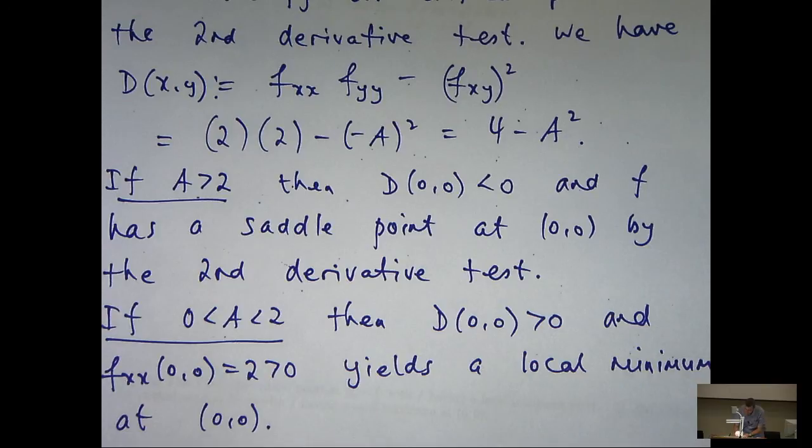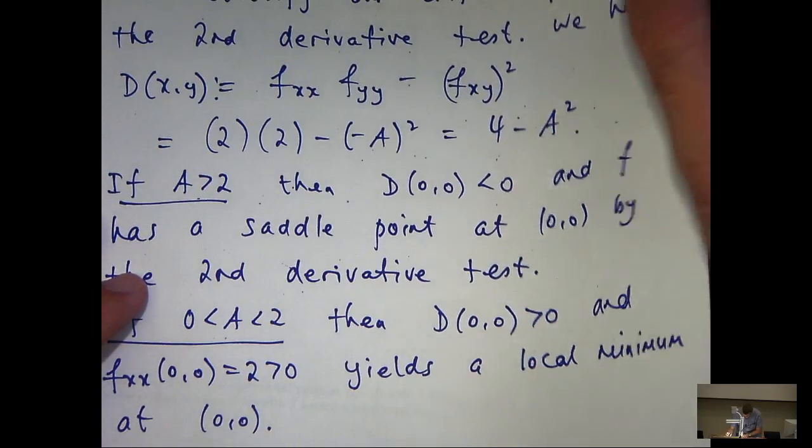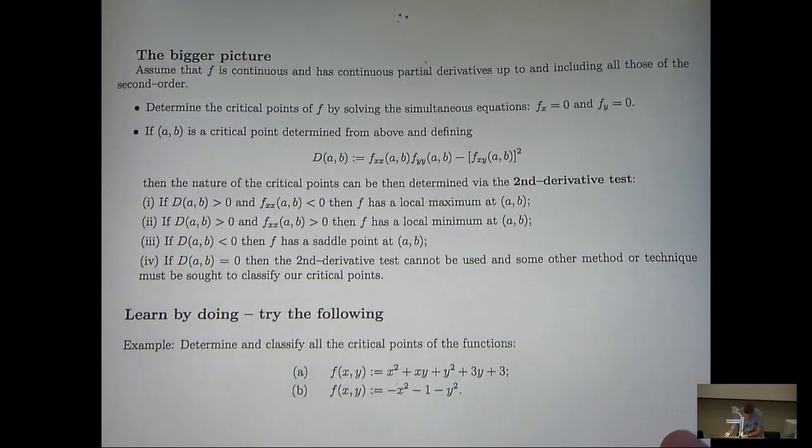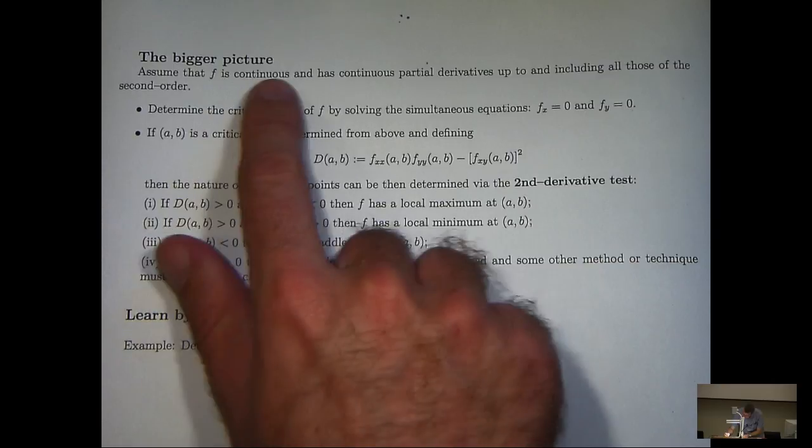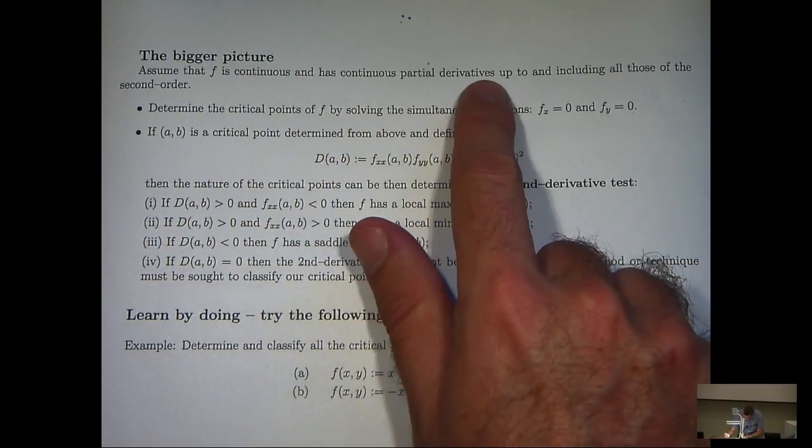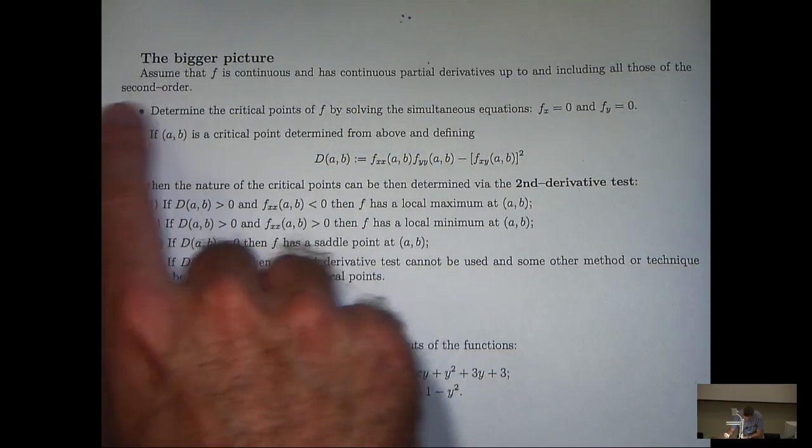Now, we've finished the question. We have, first of all, located our critical point and then we've classified it using the second derivative test. So, let's have a look at the bigger picture though. What are some ideas you can use in all sorts of problems? Well, assuming that f is continuous and has continuous partial derivatives up to including all of those of the second order.